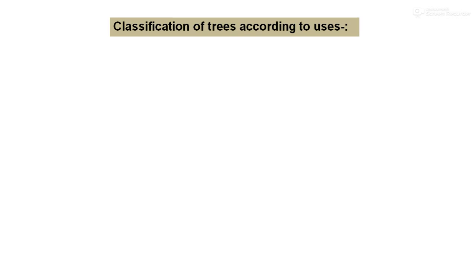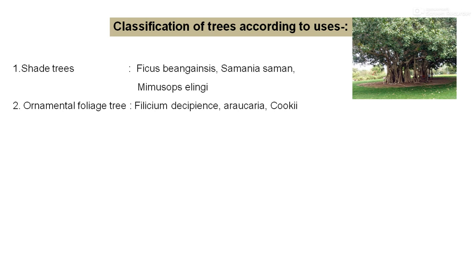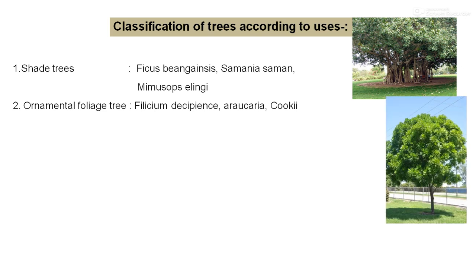Classification of trees on the basis of their uses: Trees are classified as shade trees — those which have a dense canopy and provide shade, like Ficus species. Then ornamental foliage trees — those which have an attractive type of foliage acting as a peculiar feature, like Filicium decipiens, Erythrina, and Cocos, etc.